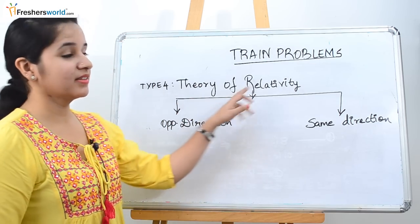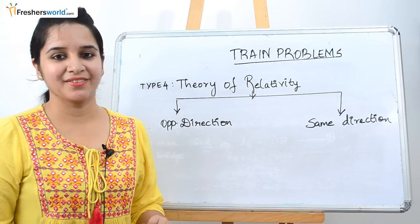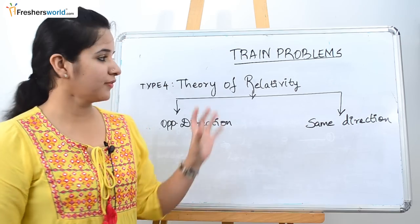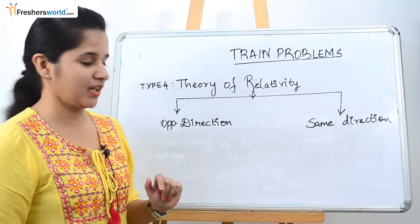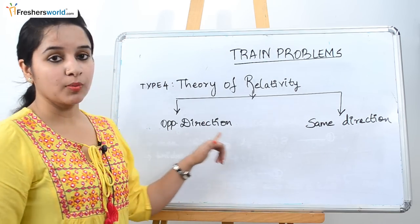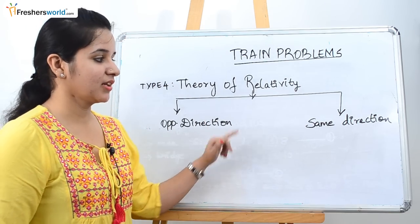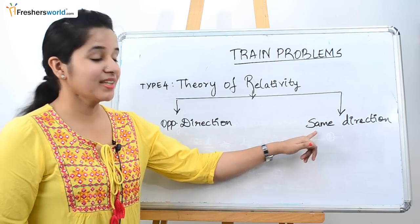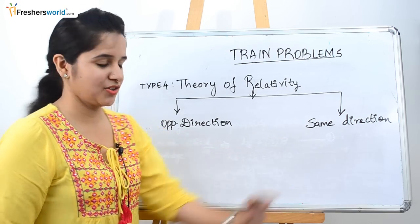So Type 4 is nothing but the theory of relativity. There are two types: one is train moving in opposite direction and train moving in the same direction.